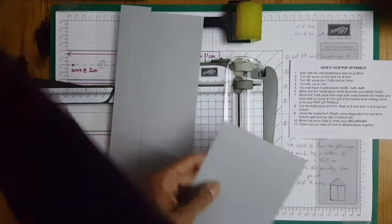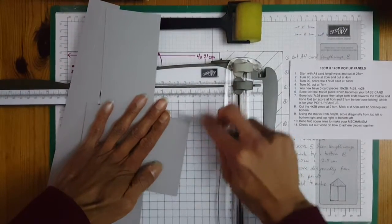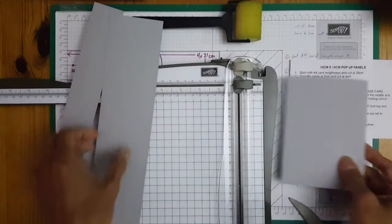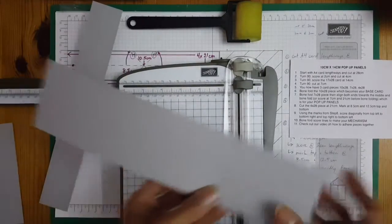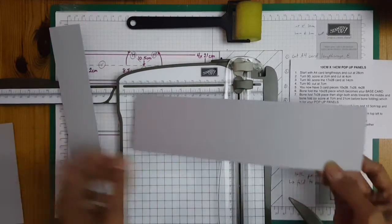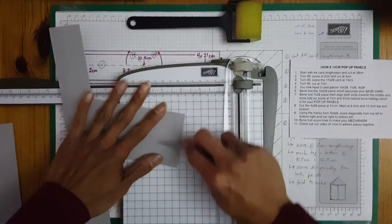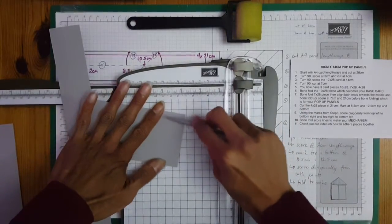Just use a bone folder. This one would be for the panels. Just score that and bone fold.